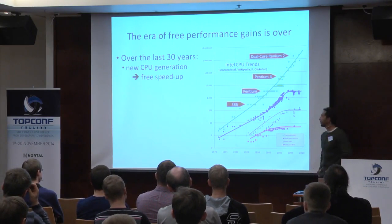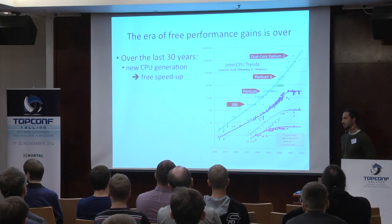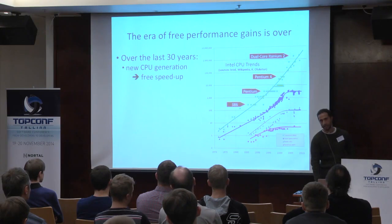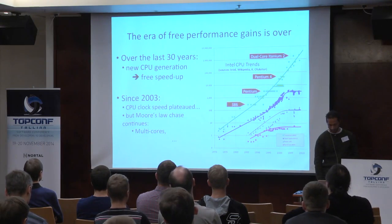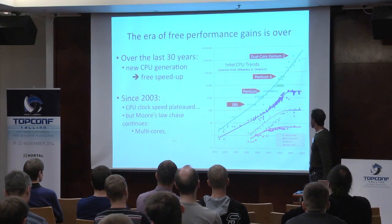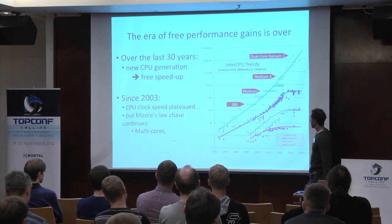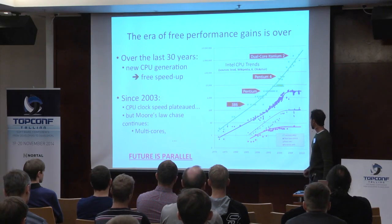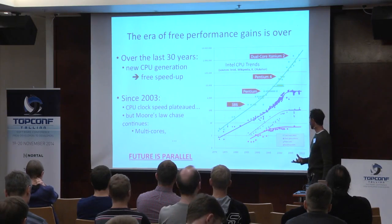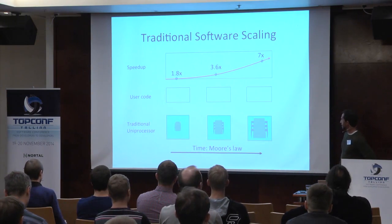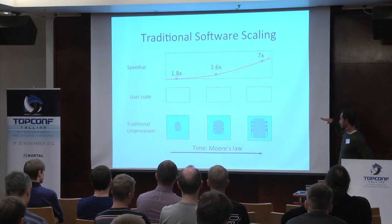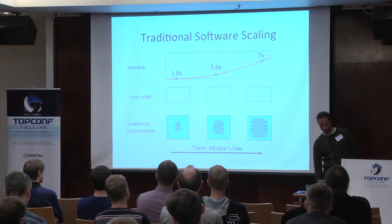The era of free performance gain is over since about 10 years. For 30 years we could hope that a new generation of Intel processors would give us free speedups. This is no longer true. We still have an increasing number of transistors in our processors because we have multi-cores. In order to achieve better speedups today and tomorrow, we need to write our applications in a parallel way. Over time, since processors underneath our user code would get faster, we would get speedups — the so-called traditional software scaling law.